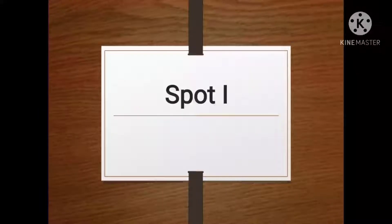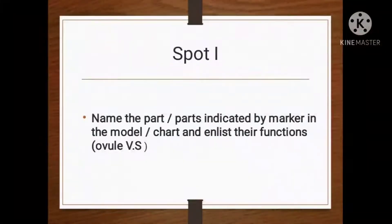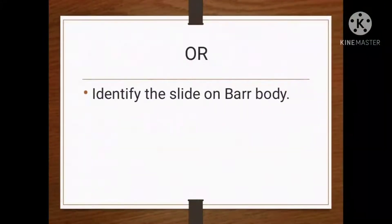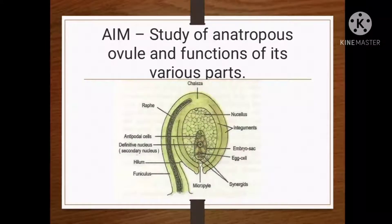For Spot I, in the examination, the teachers will give you: name the parts or the part indicated by marker in the model or chart and enlist their functions. So in front of you a model or chart will be there and you have to write down the function of that particular part. Here we are going to study about the Anatropous ovule. The aim is: study of Anatropous ovule and functions of its various parts.